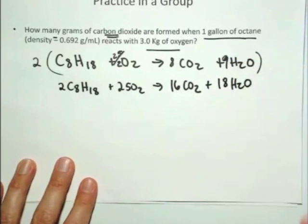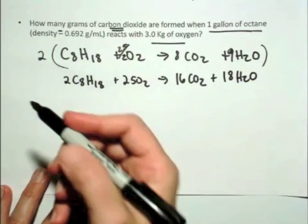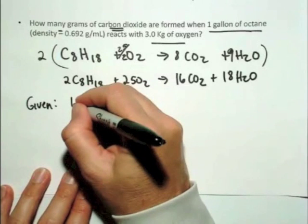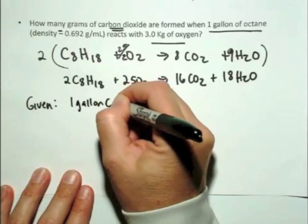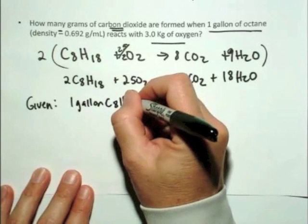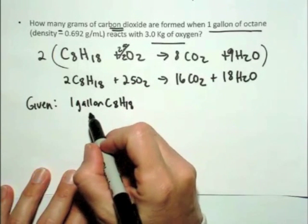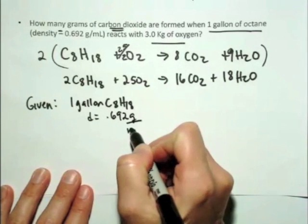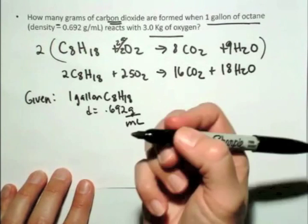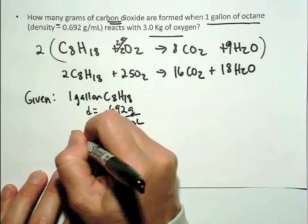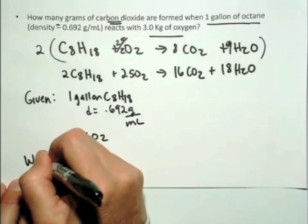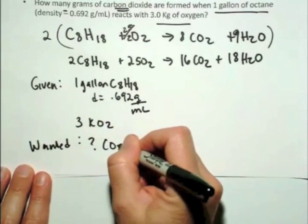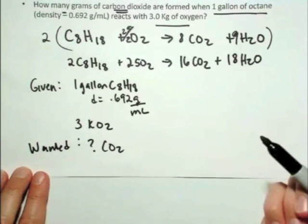Okay, that's the balanced chemical reaction that you should have come up with. Next you want to see what's given. What's given is one gallon of octane, C8H18, that happens to have a density of 0.692 grams per milliliter, and also three kilograms of oxygen. And what's wanted is how much carbon dioxide is formed in this case, when you burn a gallon of gas, basically, in your car.